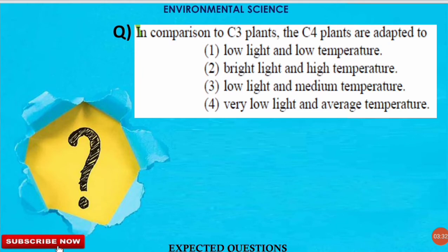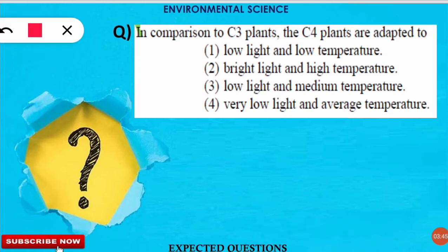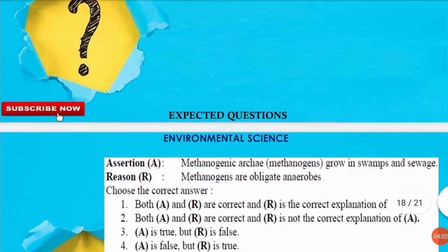The next question is: in comparison to C3 plants, C4 plants are adapted to which of the following? The correct option is option 2 — C4 plants are adapted to bright light and high temperature. For more details on the differences and mechanisms of C3 and C4 plants, check the link in the description below.